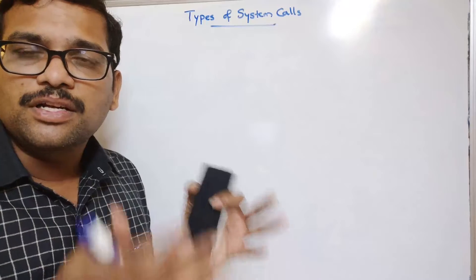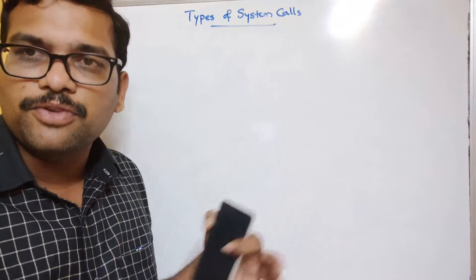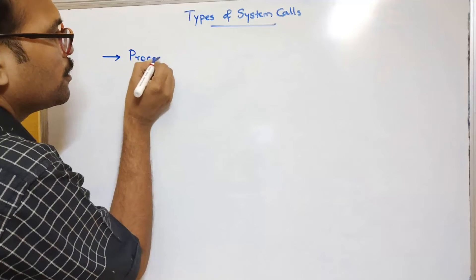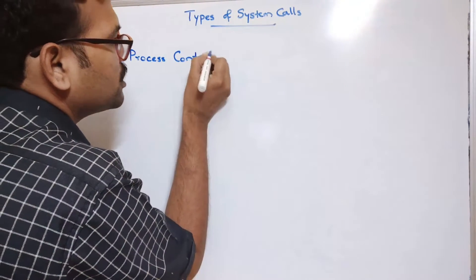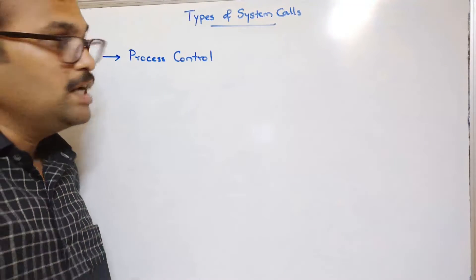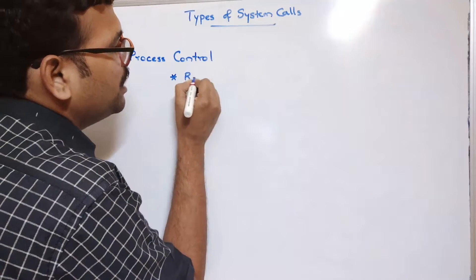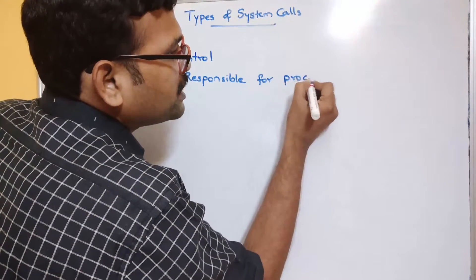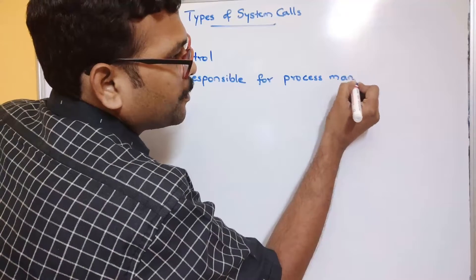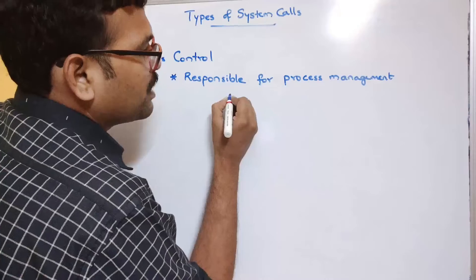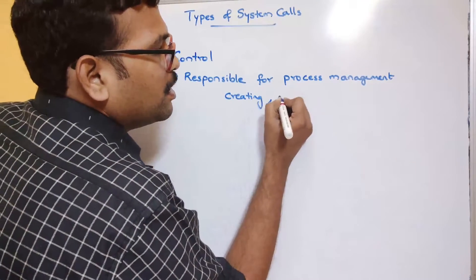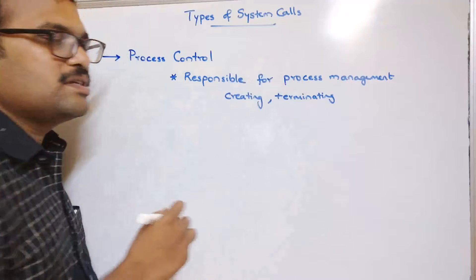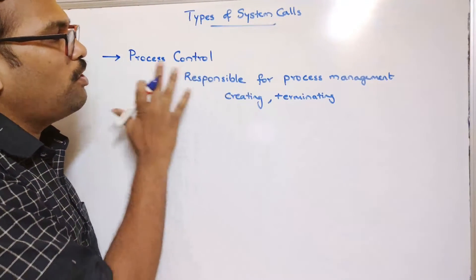There are different types of system calls, and in this session we'll discuss them. The first category is process control system calls. These system calls are responsible for process management — that is, creating a process or terminating a process. Everything related to process creation and termination falls under process control system calls.